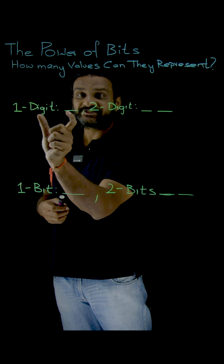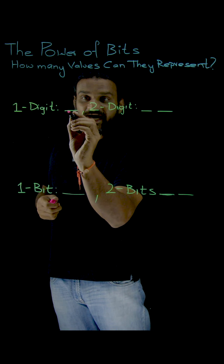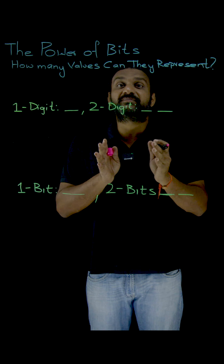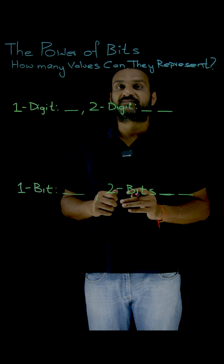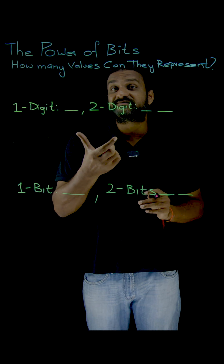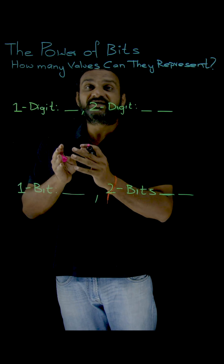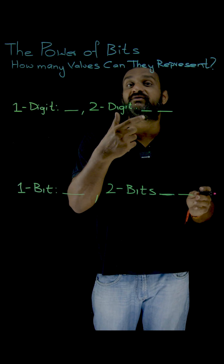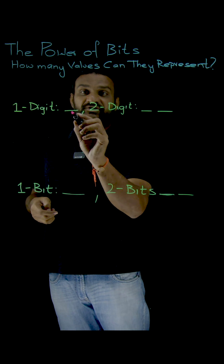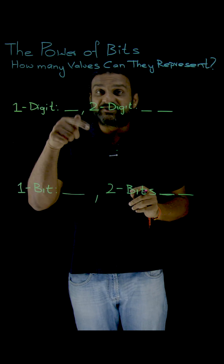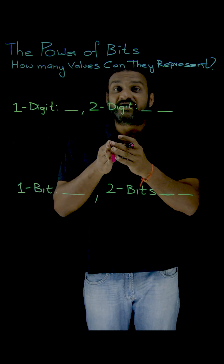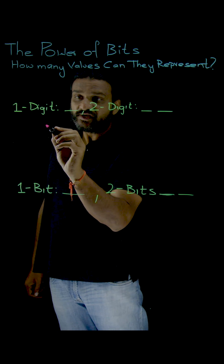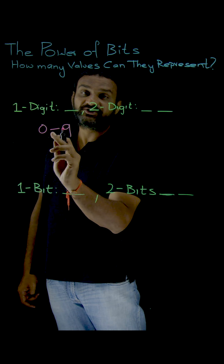Here we are having a one-digit space. In this one-digit space, how many different unique decimal numbers are possible? What is the range of numbers and what are the values that we can represent? With one-digit space, there are 10 different decimal numbers. We can accommodate 10 unique decimal numbers and the range is from 0 to 9.